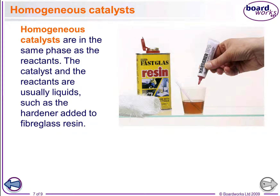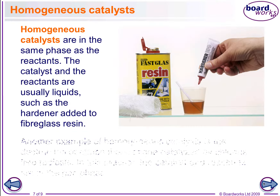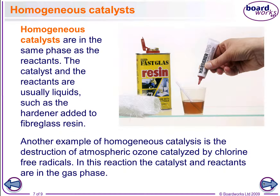Homogeneous catalysts are ones that act in the same state as the reactant. In this example, you've got the resin — the fibreglass hardener is a catalyst that's added, and they're both in the same phase. It makes the resin go off quicker in order to let the fibreglass set in less time, so it goes off quickly and doesn't lose its shape.